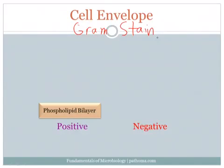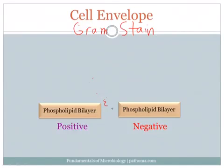Both gram-positive and gram-negative bacteria have on the innermost layer a phospholipid bilayer. Bilayer means two layers — two layers of phospholipids. Each phospholipid layer has a polar head on the outside and two nonpolar phospholipid tails on the inside. The polar head is on the outside because water is polar, and that's in contact with the aqueous or water-filled area.